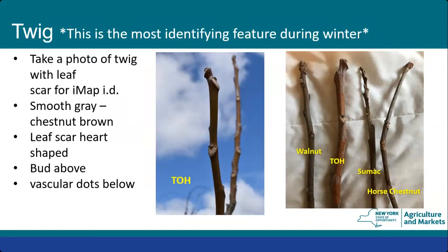The bark when young looks almost like cantaloupe skin — slightly textured but mostly smooth. When older the bark can be quite chunky and blocky. Looking at the twigs: they have a smooth grayish-chestnut-brown color, a heart-shaped leaf scar clearly visible in the center photo, a smaller bud at the crevice of the heart, and vascular dots below that. Walnut's leaf scars are very small compared to tree of heaven, sumac has very angular stems with small buds and leaf scars, and horse chestnut has large buds but leaf scars that are not heart-shaped.